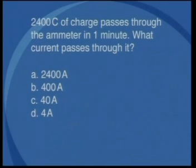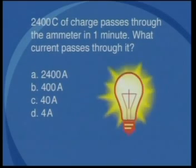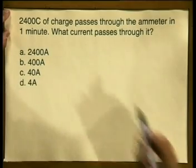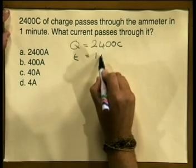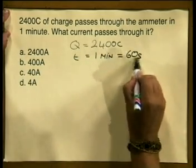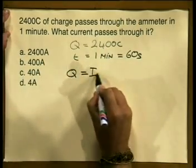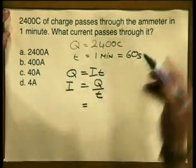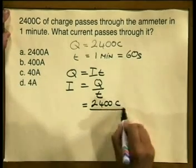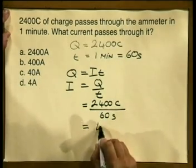And now for our final question. 2,400 coulombs of charge passes through the ammeter in one minute. What current passes through the ammeter? Is it 2,400 amperes, 400 amperes, 40 amperes, or 4 amperes? Q is 2,400 coulombs and time is 1 minute, equaling 60 seconds. From q is equal to i times t, rearranging gives i is equal to q divided by t. Substituting: 2,400 coulombs divided by 60 seconds gives us an answer of 40 amperes.